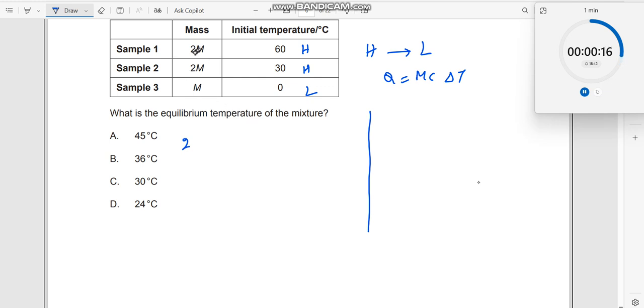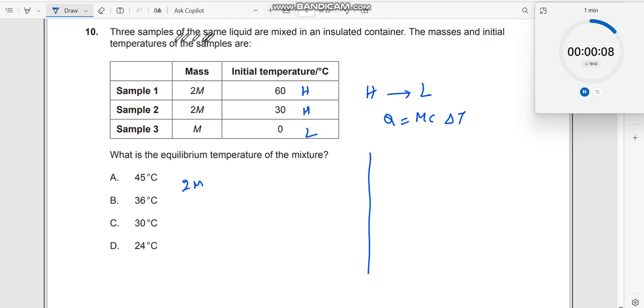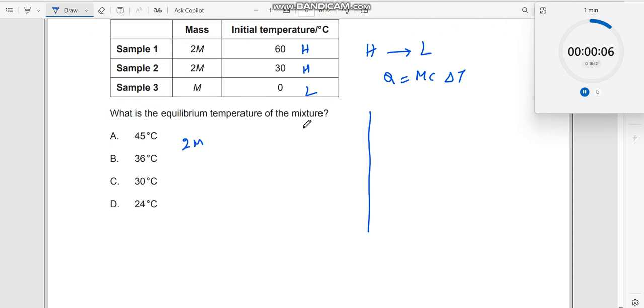So according to this, the heat transfer takes place from this one which would be 2m into what is the specific heat? Same c, right? Let us read specific heat, same liquid. So let the specific heat be c, c multiplied by delta t.